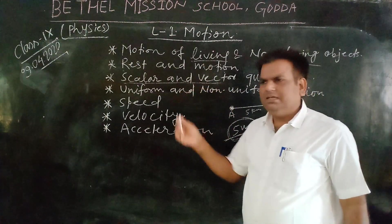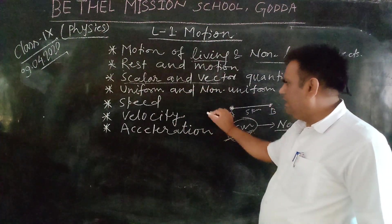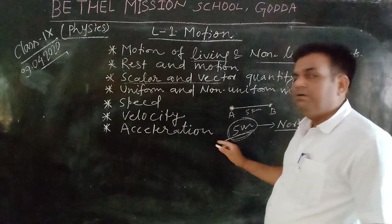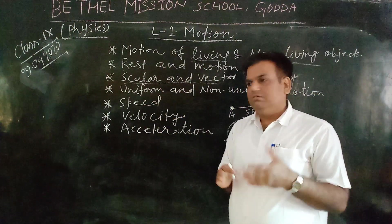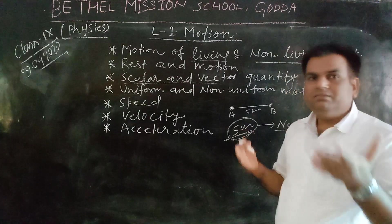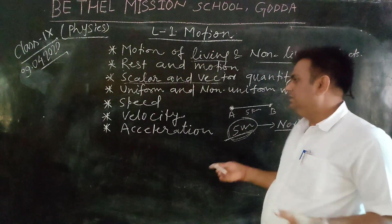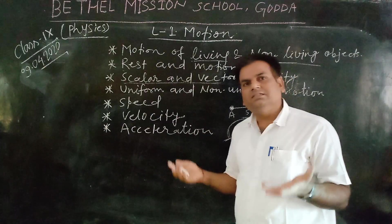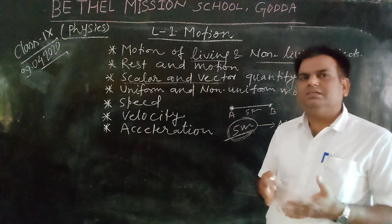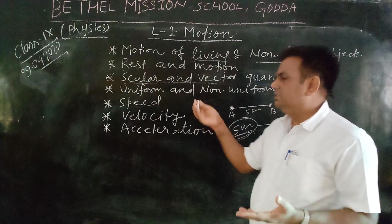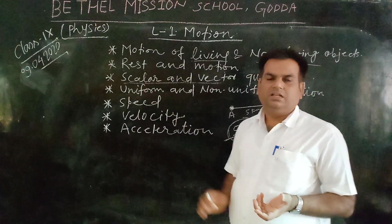There are many examples of scalar quantity: mass is a scalar quantity, time is a scalar quantity, and distance is a scalar quantity. These are some examples of physical quantities which are scalar.